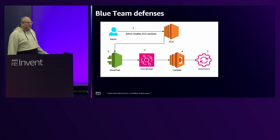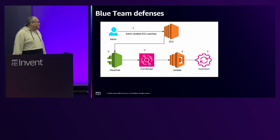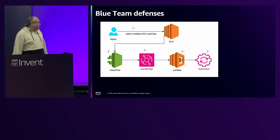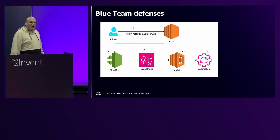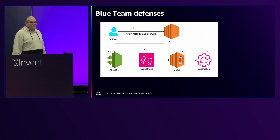This is what the flow looks like: an admin modifies the user data on an EC2 instance, the API call is logged to CloudTrail, which triggers EventBridge, which triggers a Lambda function to run your automation.